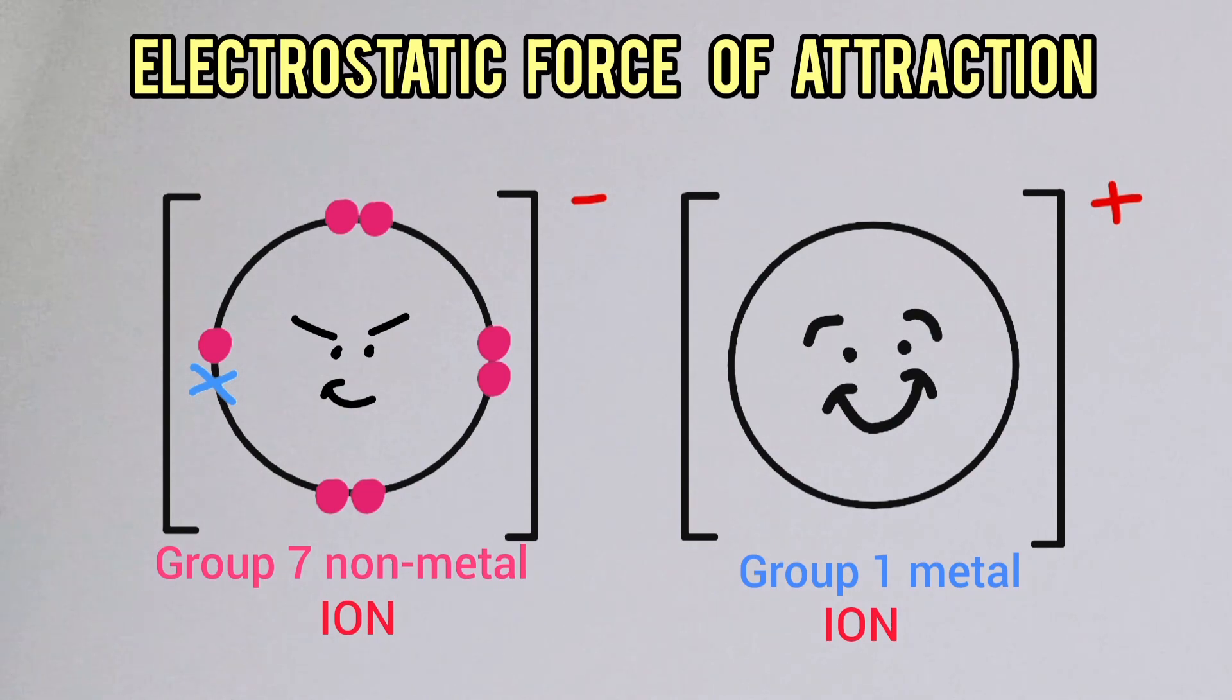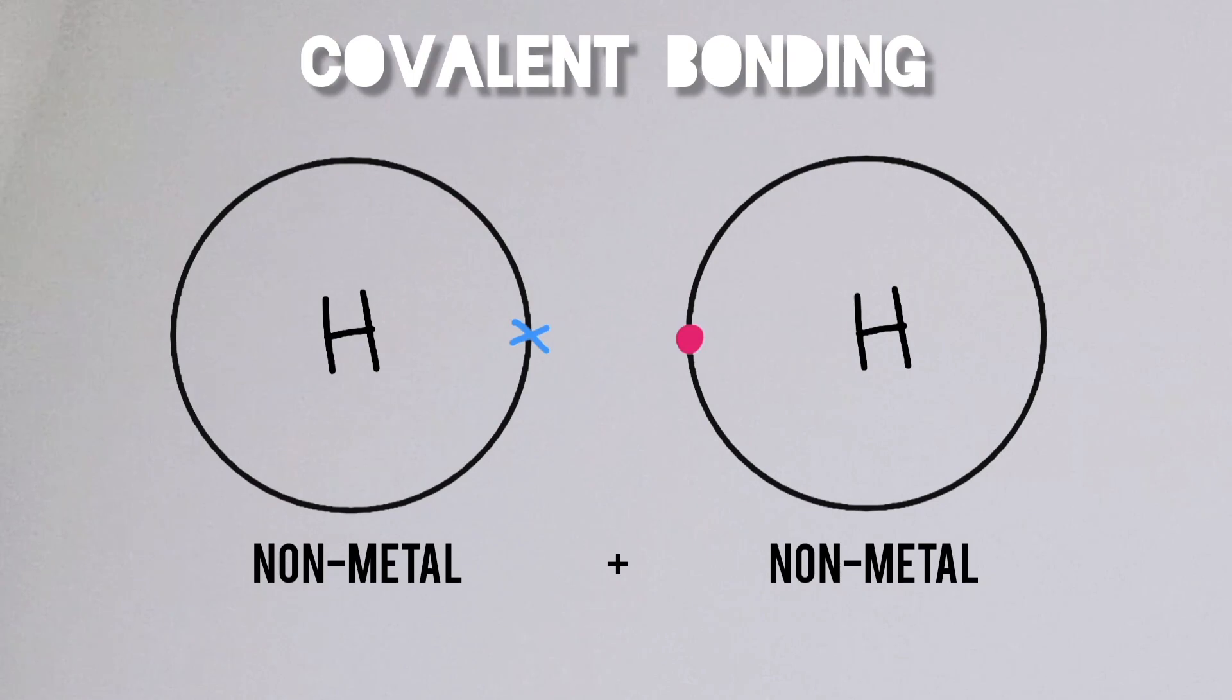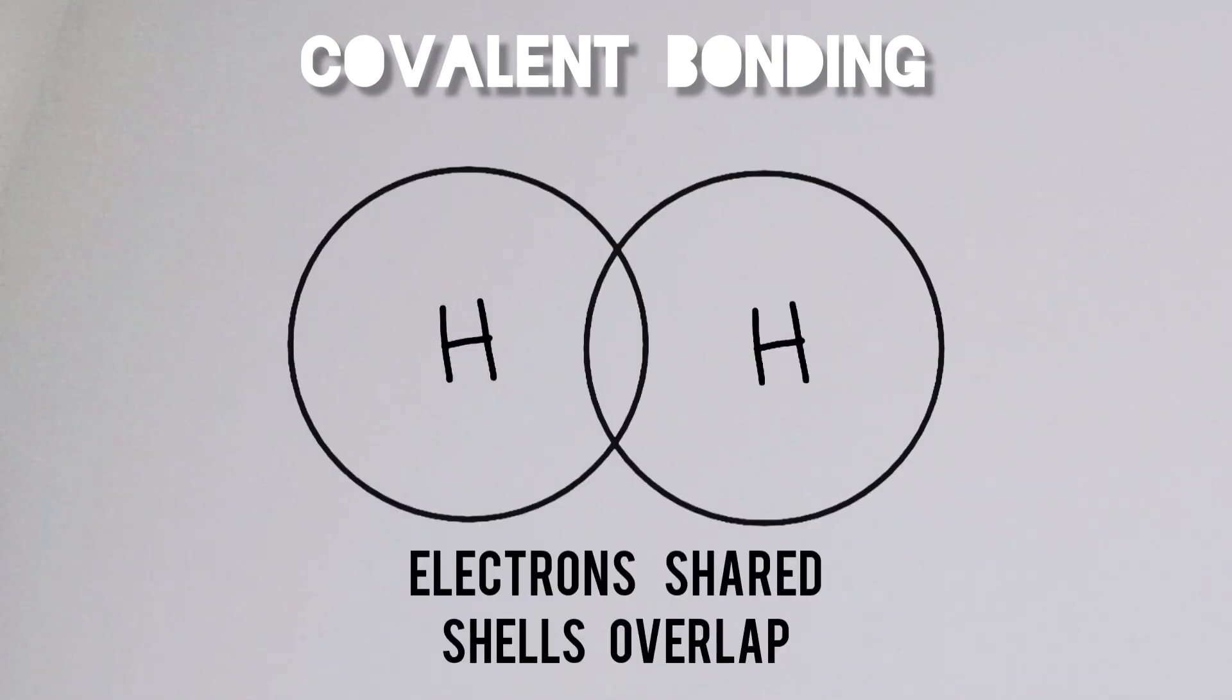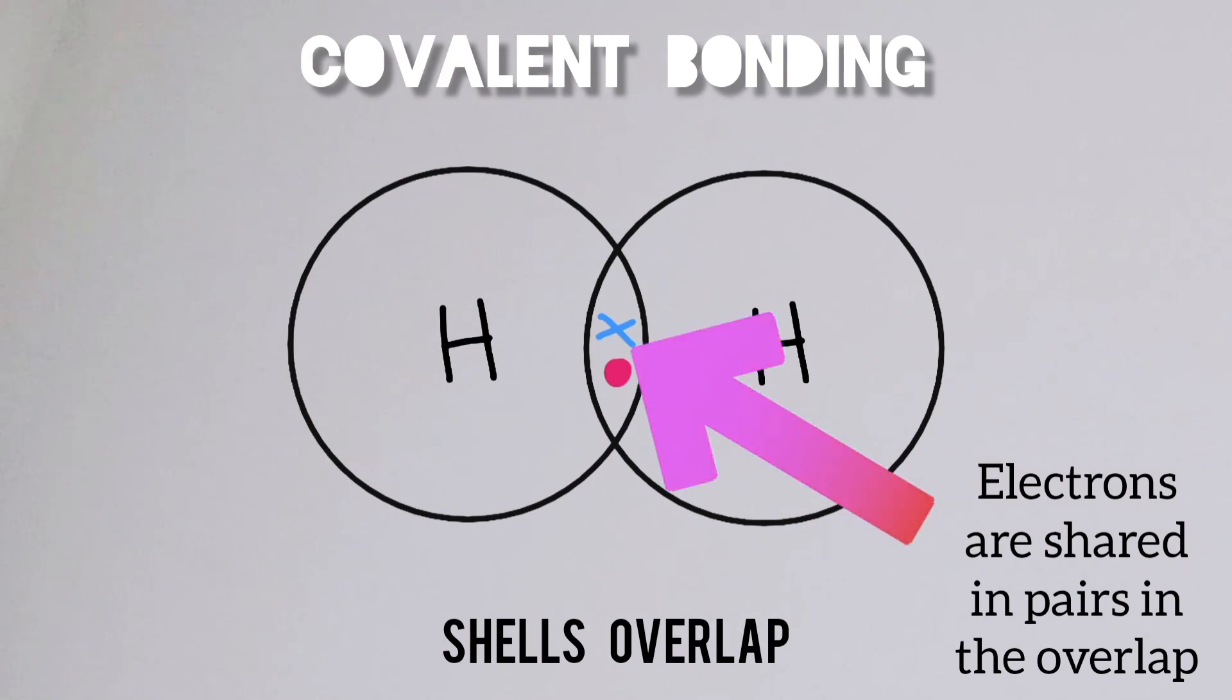Now when two non-metals bond, this is covalent and electrons shared. The outer shells overlap beyond. You put paired electrons in there. Full outer shells make them stable. Full outer shells they feel safe. Non-metals do what they're able. If nobody wants to shed then they'll take.